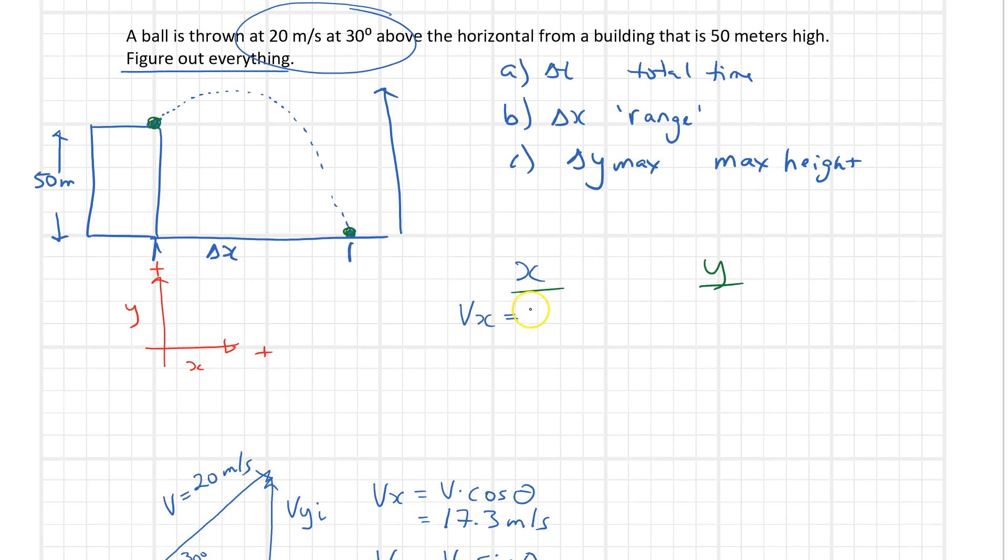Over here when I do this work I'll say this is 17.3 meters per second. I'm going to have to figure out the time and the time is going to come from the other section. Looking at the y side, I got vyi which is 10 meters per second and it is up because here I said that up is positive. Vy final, don't know what that is. Delta t is really what I want to find out here. And what else do we know? Well, delta y. If it's starting up here and ending down there, delta y is going to be minus 50 meters because it starts here and it's going downwards. Of course we know the acceleration is equal to negative 10 meters per second squared.